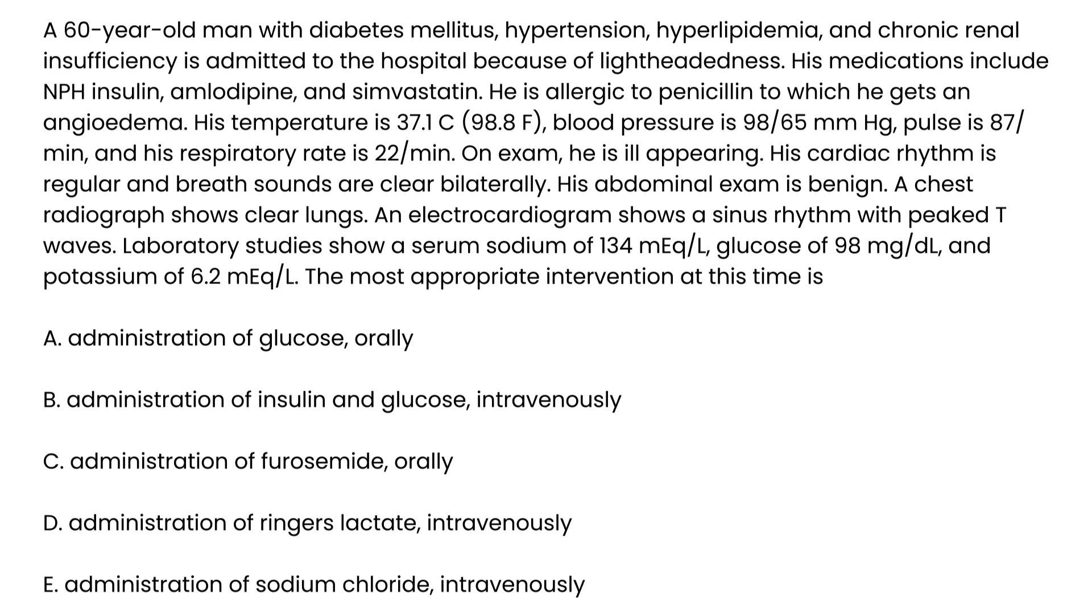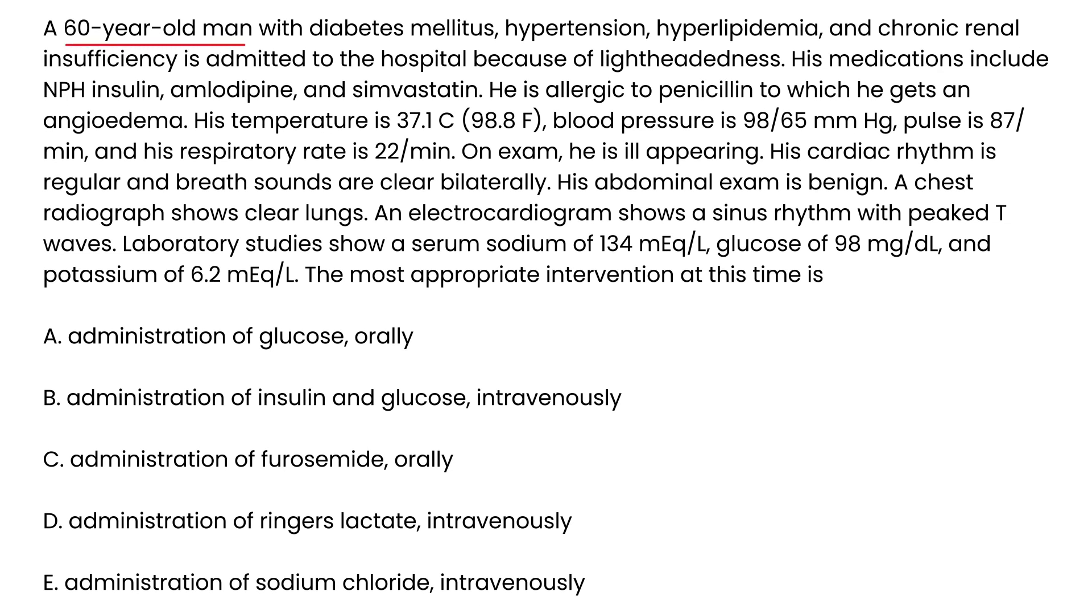Let's take a look at a few vignettes. A 60-year-old man with diabetes, hypertension, lipidemia, and chronic renal insufficiency is admitted to the hospital because of lightheadedness. His meds include insulin, amlodipine, and simvastatin. He is allergic to penicillin. Temperature is 98, blood pressure is 98, pulse is 87, respiratory rate 22. On exam he is ill-appearing, cardiac rhythm is regular, breath sounds are clear, abdomen is benign. Chest x-ray shows clear lungs. EKG shows sinus rhythm with peaked T waves. Lab studies show serum sodium of 134, glucose at 98, potassium of 6.2. Most appropriate intervention at this time is?